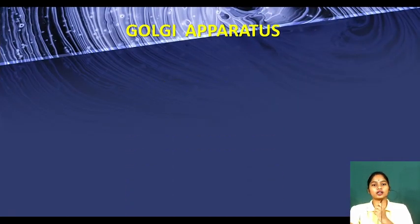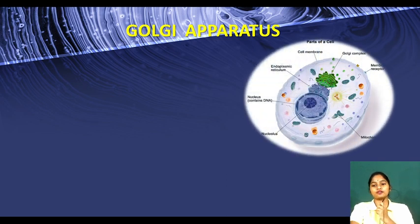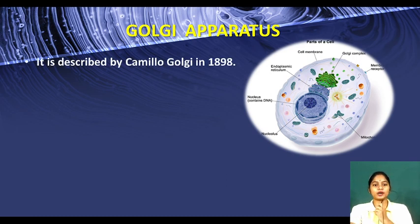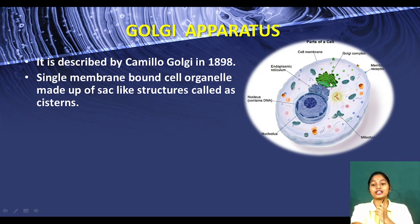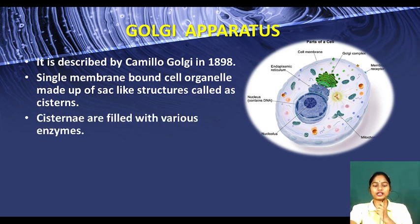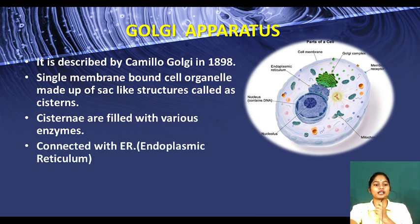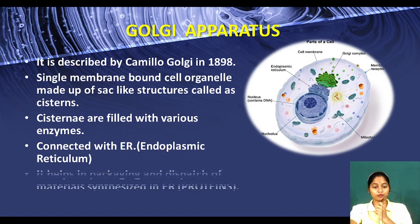Let's start with the Golgi apparatus. You can see in the diagram — the green colored structure attached with the endoplasmic reticulum is the Golgi apparatus, also called the Golgi complex. It was described by Camillo Golgi in 1898. It is a single membrane-bound cell organelle made up of sac-like structures called cisterns. These sac-like structures are filled with various enzymes and connected with the endoplasmic reticulum.